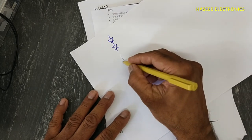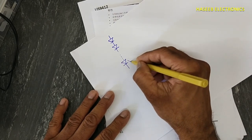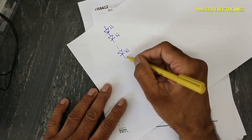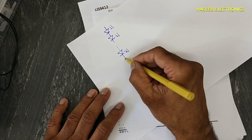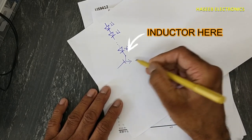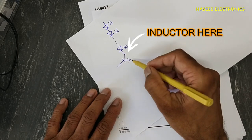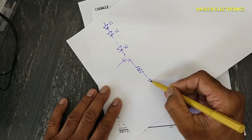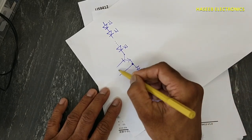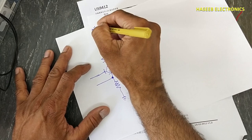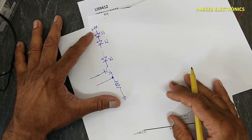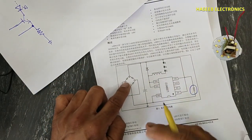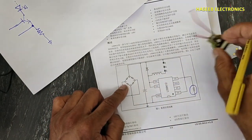The LEDs are in series connections. Then this switching device is a MOSFET — I will draw the symbol of a transistor so it is easier to understand. It also has an inductor and a resistor. This is the negative end — this is the simplified circuit of this LED driver.